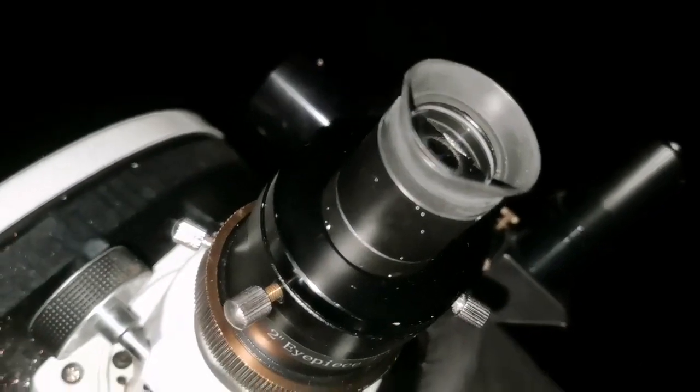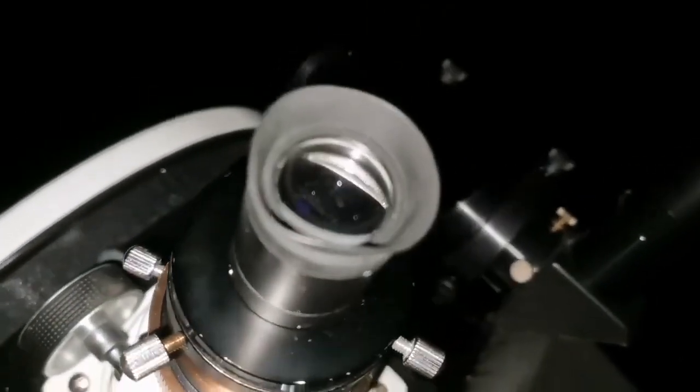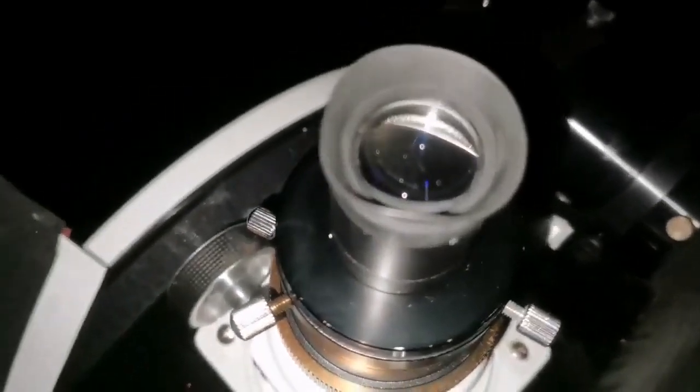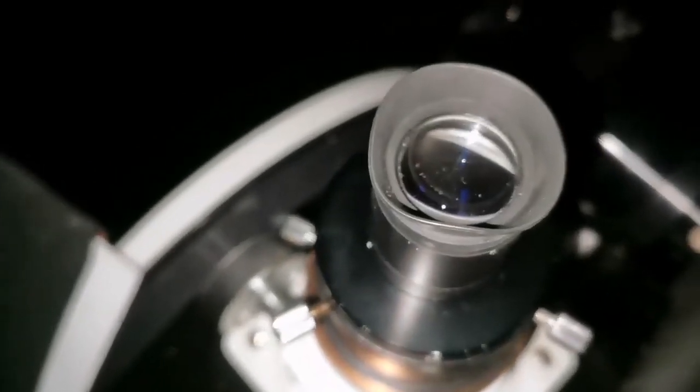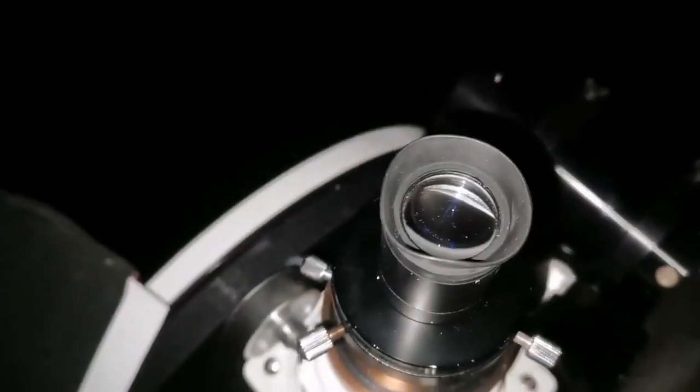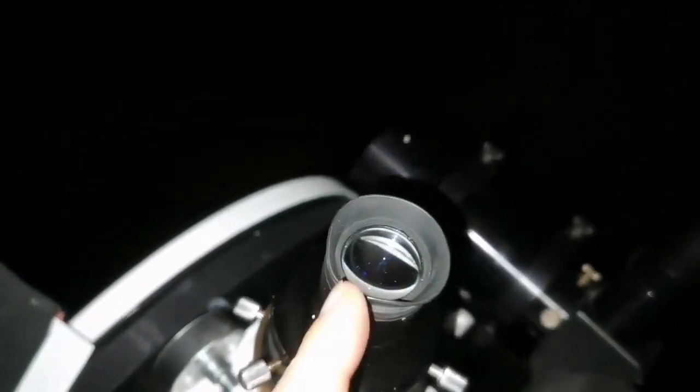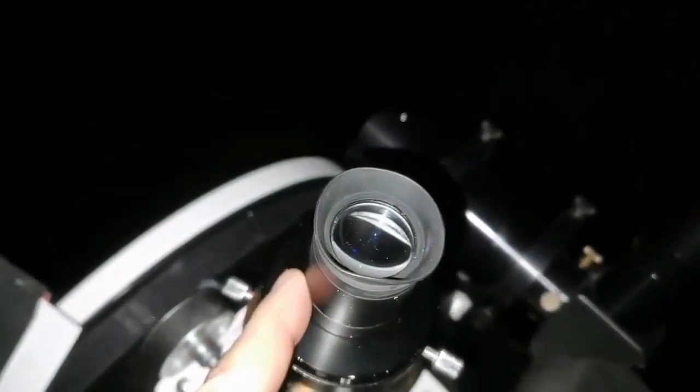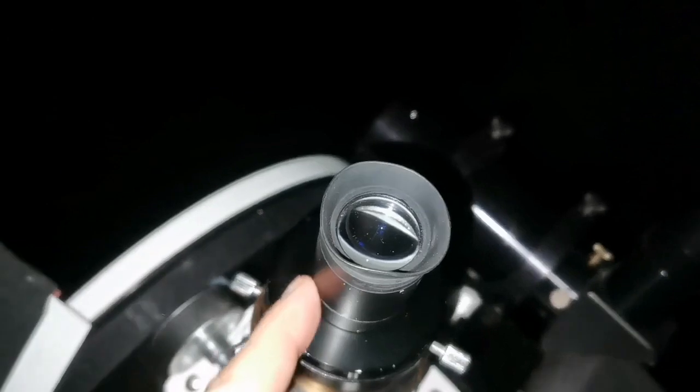I'm using this 25 millimeter Plossl which is unbranded. I don't know where it is made. It's just a rubbish eyepiece that we don't even look at. I can see the same details in M57 as I did with the Ethos 21 millimeter 100 degree eyepiece. The price of this is not even 8 pounds and that Ethos 21 is 800 pounds. Now they have increased the price.